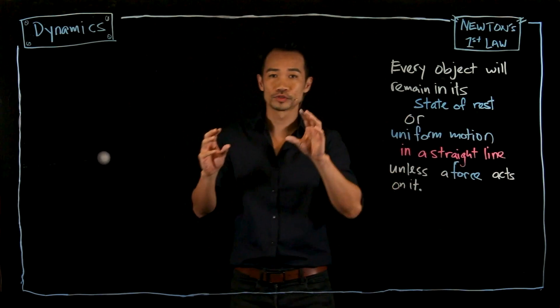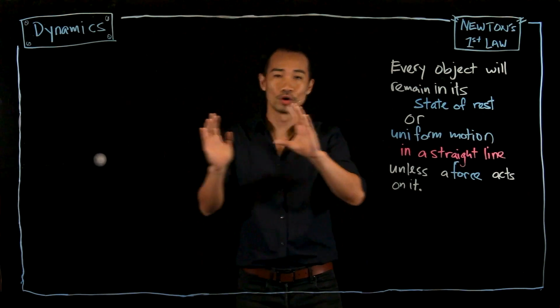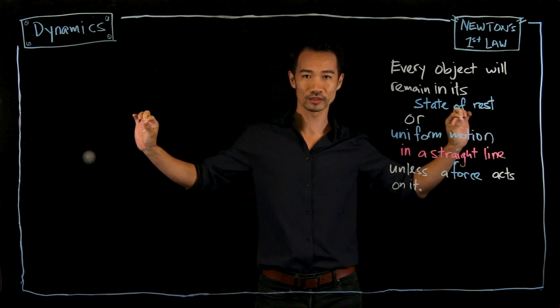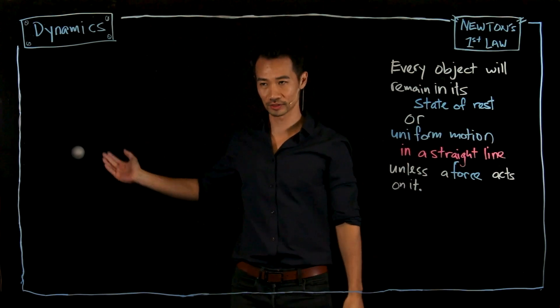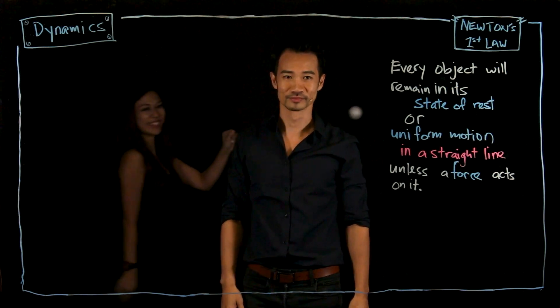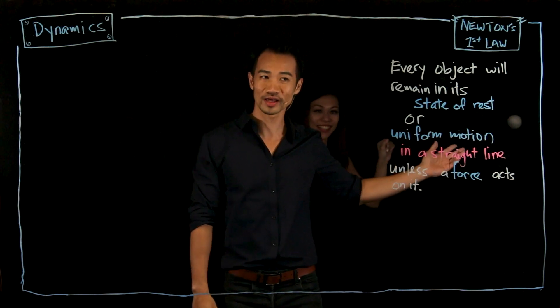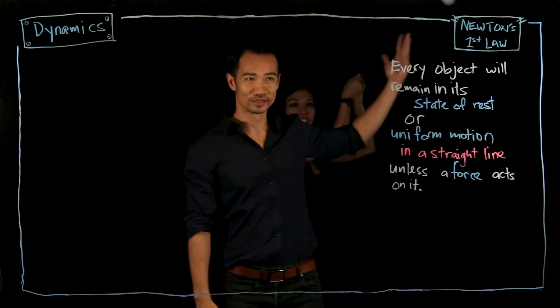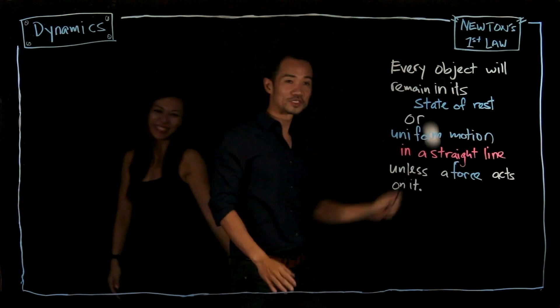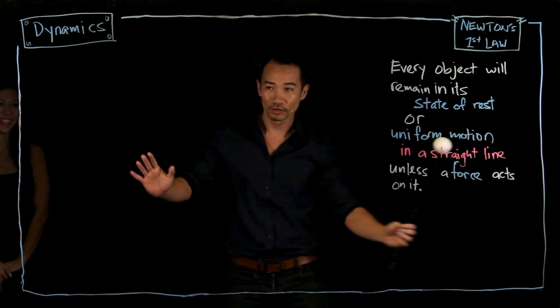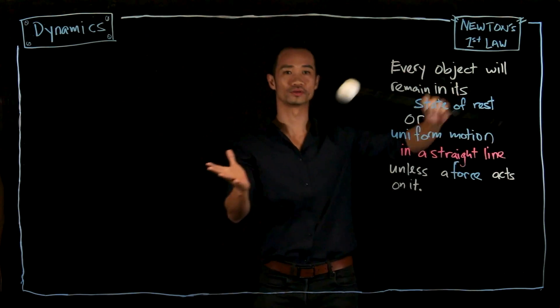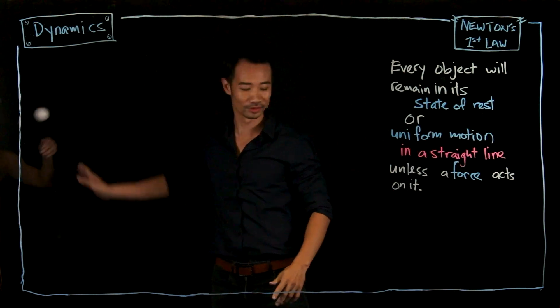Lastly, is that every object will remain in a motion, uniform motion, in a straight line. So it will not bend. So if it is moving uniformly in a straight line, it will stay in a straight line unless there is a force that acts on it. That is when it starts to move all around the place. No force. But if there is a force, it will start to bend.